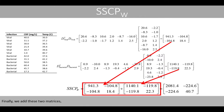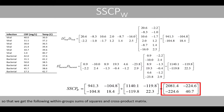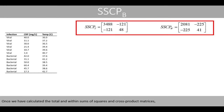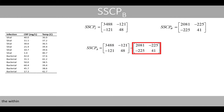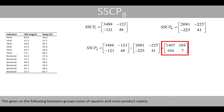Finally, we add these two matrices to get the within-groups sums of squares and cross-product matrix. Once we have calculated the total and within sums of squares and cross-product matrices, we can calculate the between-groups sums of squares and cross-product matrix by subtracting the within from the total. This gives us the between-groups sums of squares and cross-product matrix.